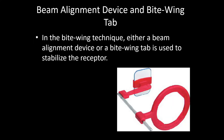Bitwing technique requires a special beam alignment device and a bitwing tab. This is the bitwing tab on which the patient is supposed to bite, and this is the alignment device which helps to align the x-ray beam perpendicular to the x-ray film.